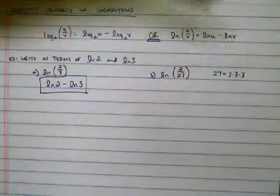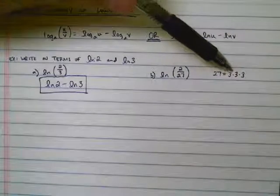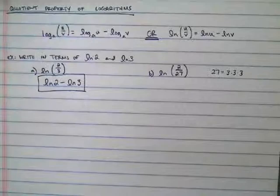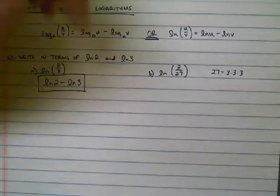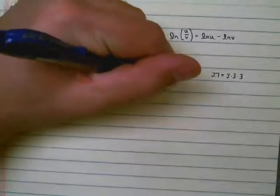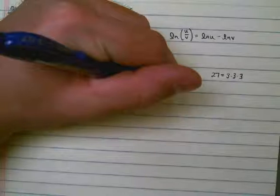Well, it turns out that 27 is equal to 3 times 3 times 3. 3 times 3 is 9, times another 3 is 27. 3 cubed. So I can rewrite this as 2 over 3 times 3 times 3.